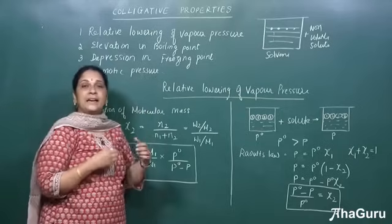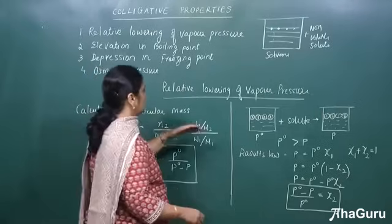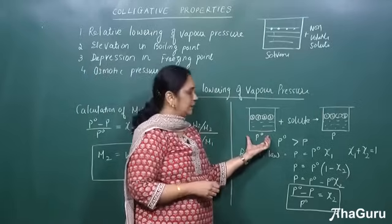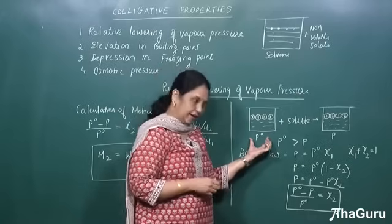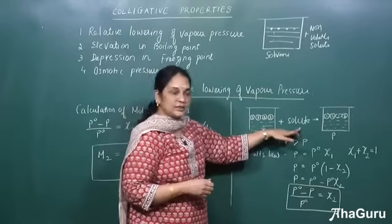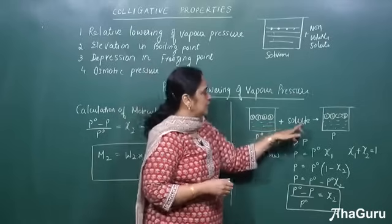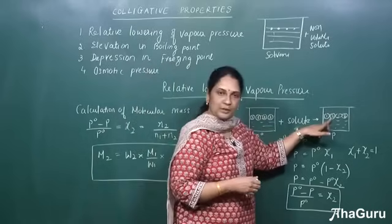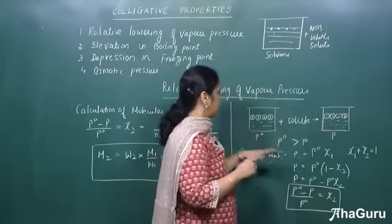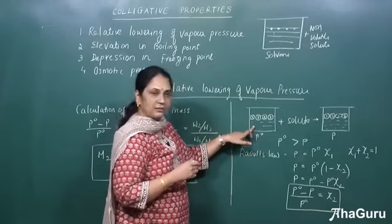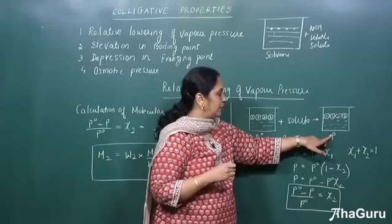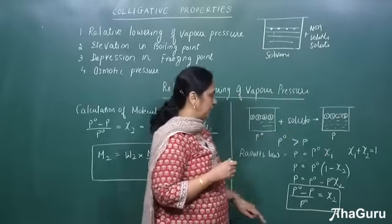The first one is relative lowering of vapor pressure. When we take a pure solvent, let us denote its vapor pressure as P0A. When I add a non-volatile solute, the solute molecules occupy surface positions and the vapor pressure decreases. So we know that P0 of the pure solvent is greater than P after adding the solute particles.